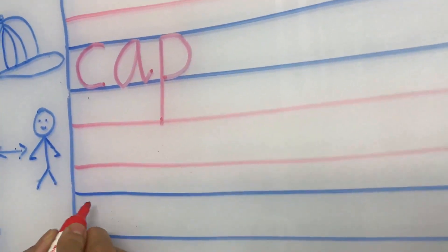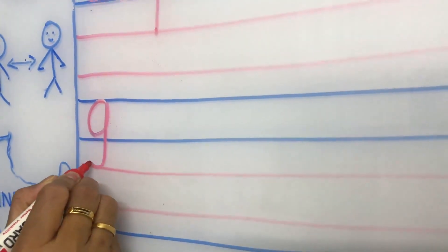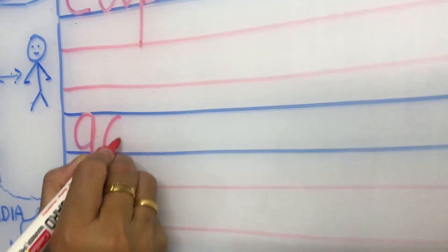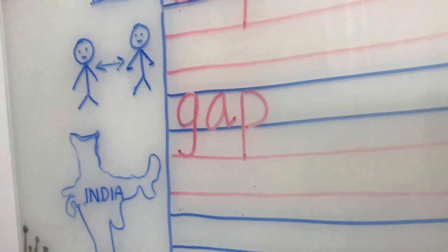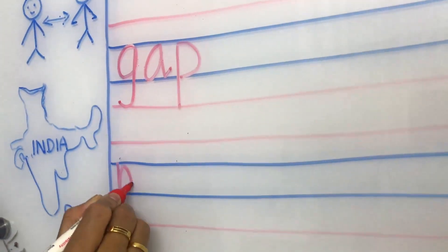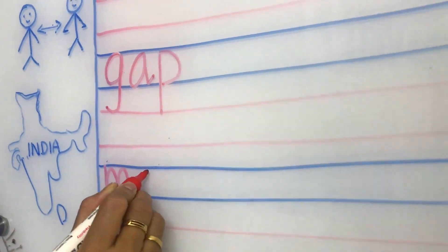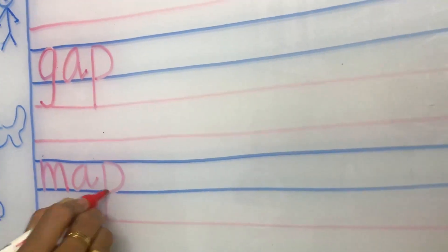What is the spelling of gap? G, A, P, gap. This is India map. What is the spelling of map? M, A, P, map. That's all.